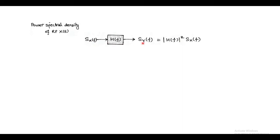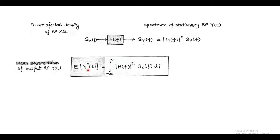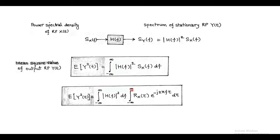S(f) is called the spectrum of stationary random process y(t). From here we can define the mean square value of output random process y(t), which equals E[y²(t)] = ∫ |H(f)|² · S(f) df. Also, in place of the power spectral density of input, we can write ∫ r(τ) e^(−j2πfτ) dτ.